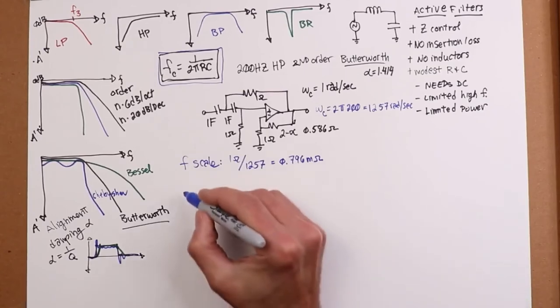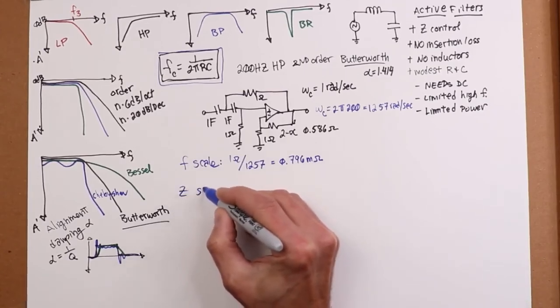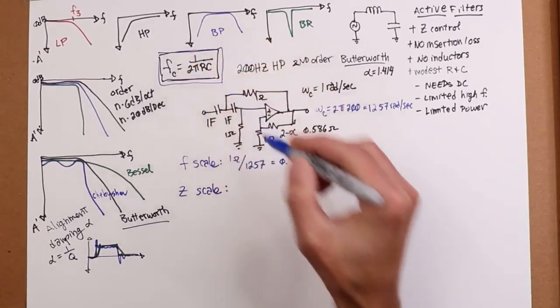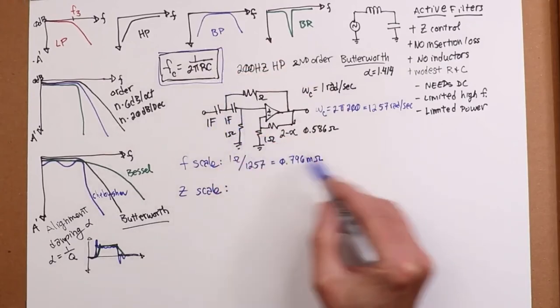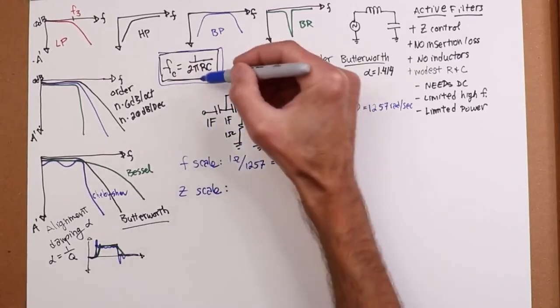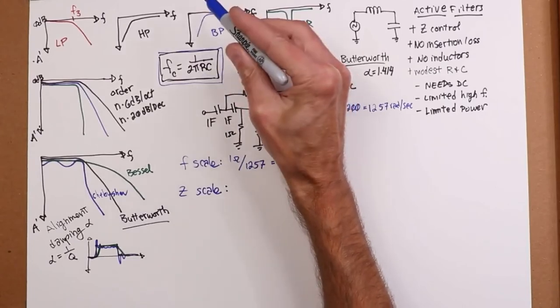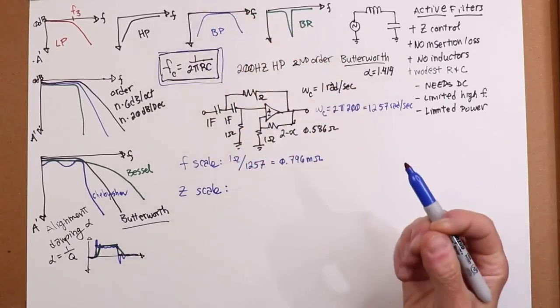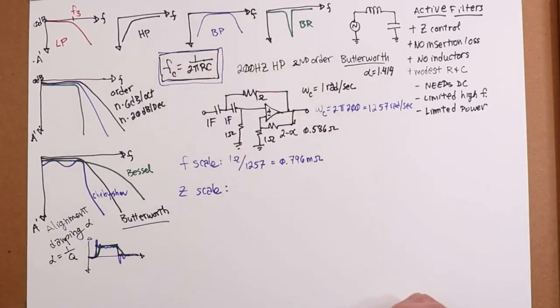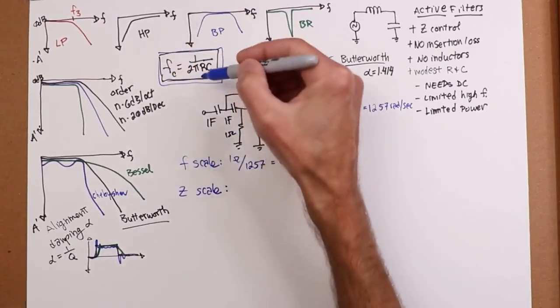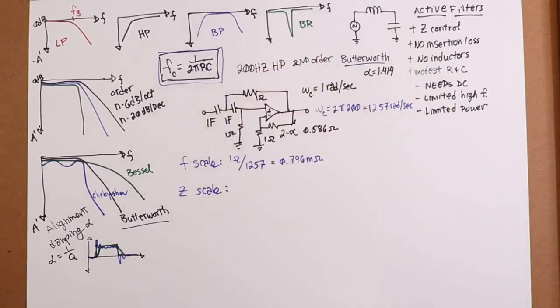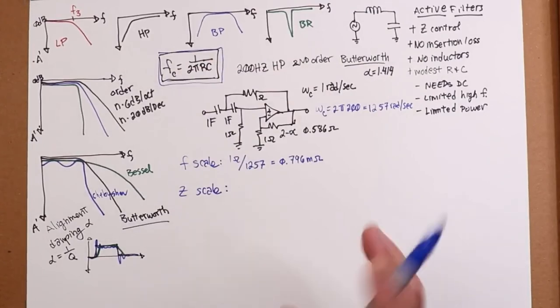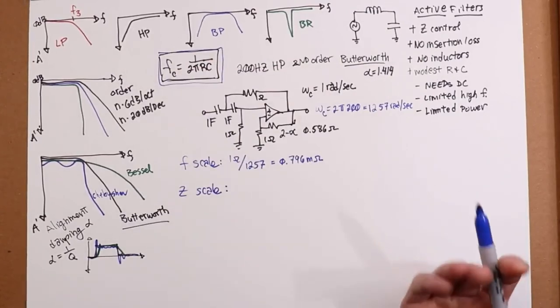So the second thing we do is a z scale, an impedance scale. And again, it's this equation. So these caps are too big, and these resistors are too small. So what I do is I increase the resistor and decrease the capacitor by the same factor, and that will keep the critical frequency the same. If I increase the resistance by a thousand and decrease the capacitor by a thousand, F doesn't move. They cancel each other out.